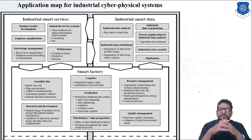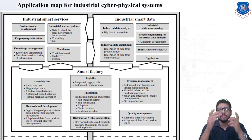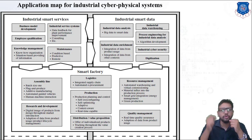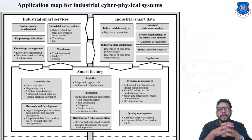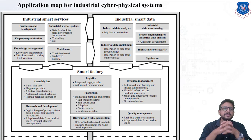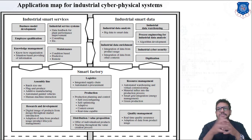Employee qualification is the most important requirement for functioning integration of users in a CPS. Regarding knowledge management, the main objective is to gather knowledge of the company's own employees and workers. The knowledge of a staff becomes another data source for industrial data engagement. Finally, maintenance aims to assure the availability of production capabilities. All of this comes under industrial smart services.